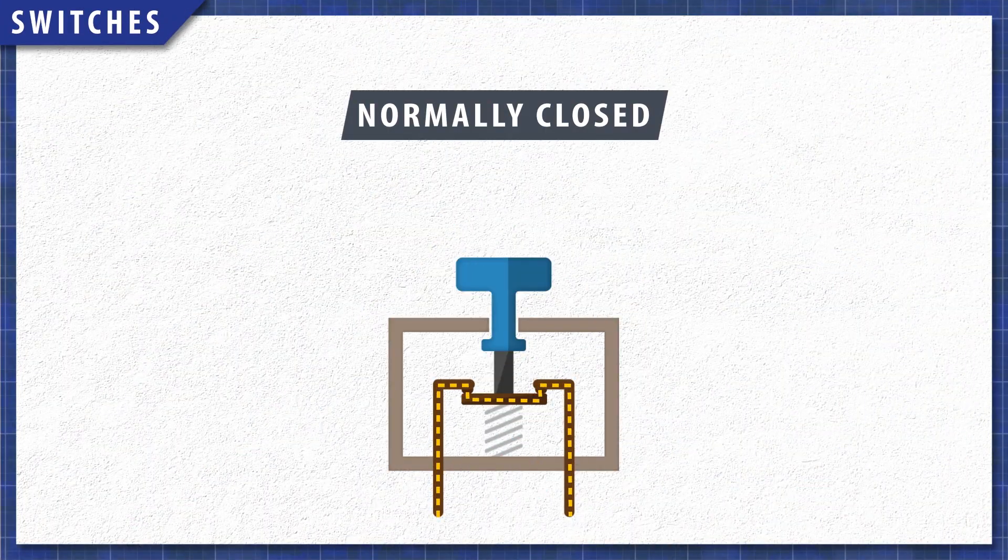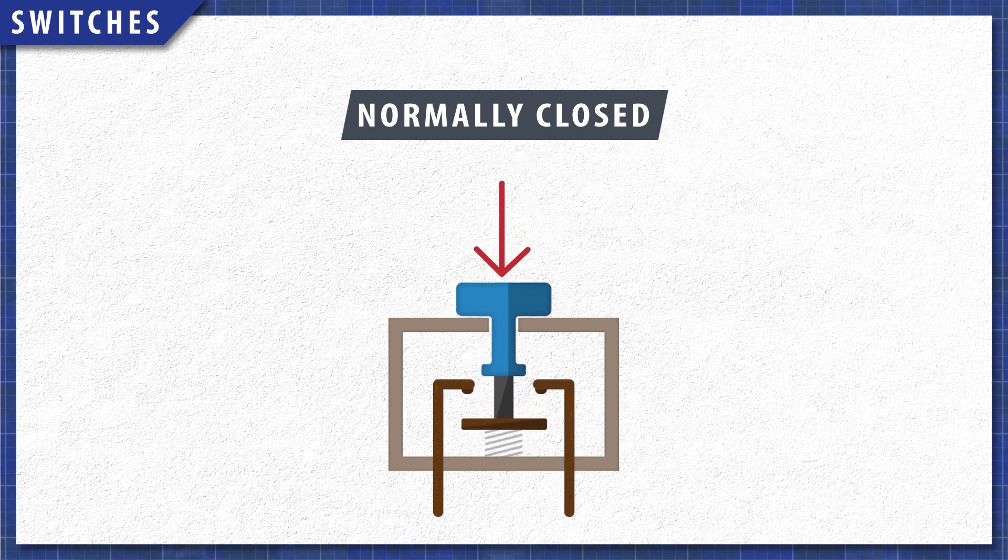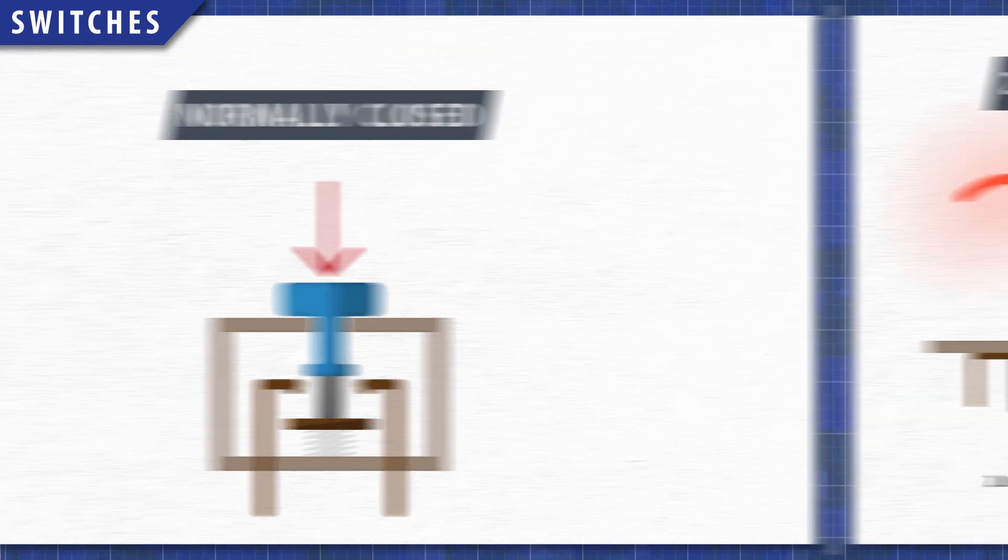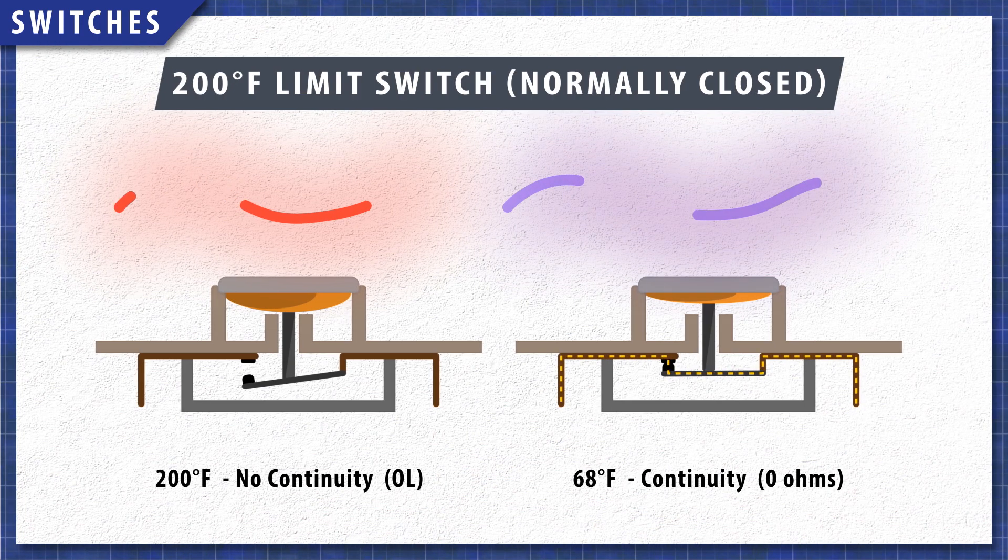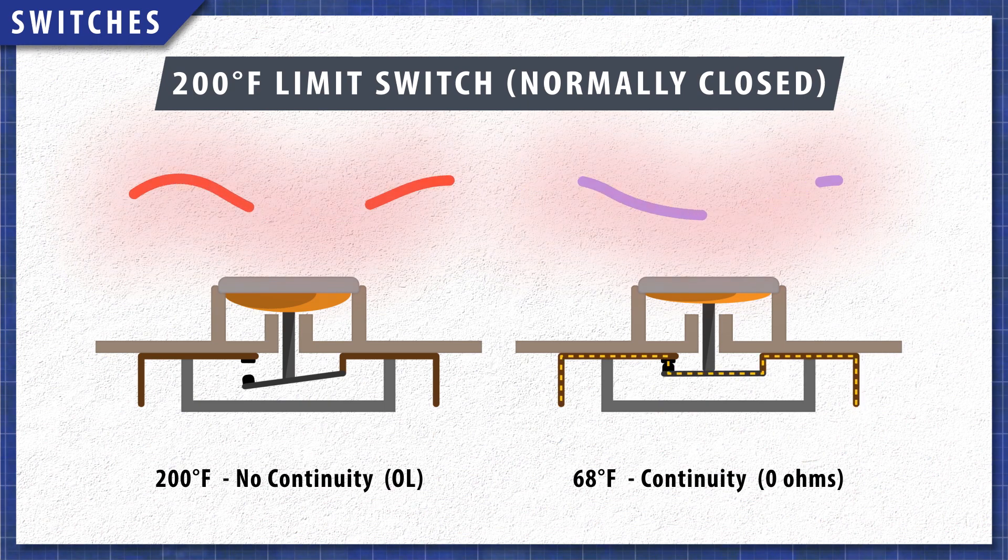Normally closed switches have continuity until the switch is opened. One example is a high limit switch rated to open at 200 degrees Fahrenheit, which will have continuity at room temperature.